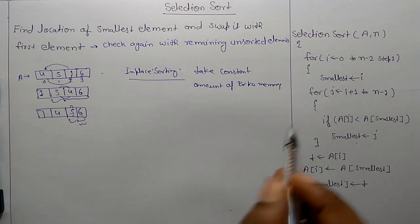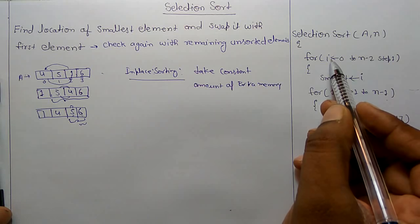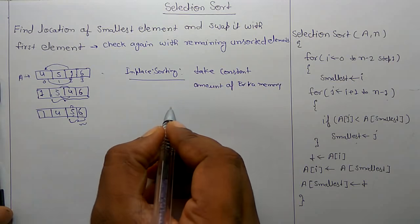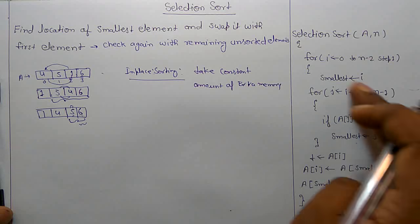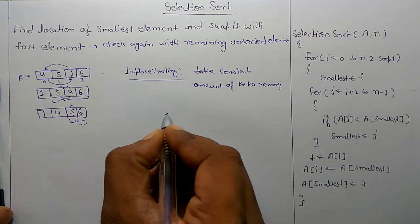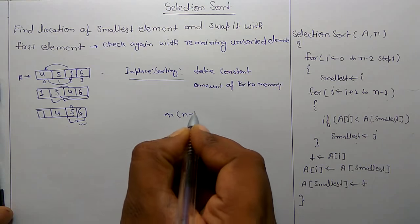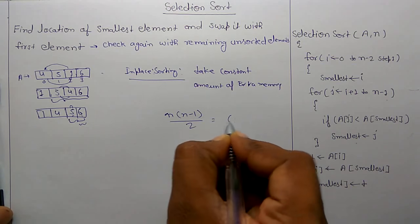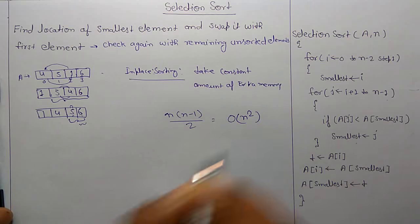So this is in-place sorting, selection sort. And the complexity of this selection sort is: this loop runs 0 to n and again it has a nested loop that also runs n times. So its complexity is n into n minus 1 by 2, which is big O of n squared. Its time complexity. Thank you.